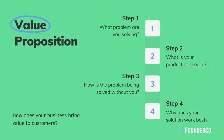Step one: what problem are you solving? Keep it really simple — just say we save time or we save money. Step two: what is your product or service? It can be 'I make cupcakes' or 'I shovel snow.' Keep these first two steps really easy and light, so that if you handed this to someone right off the street, they would understand exactly what you do and what problem you're solving.